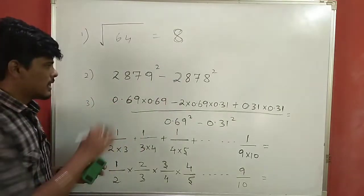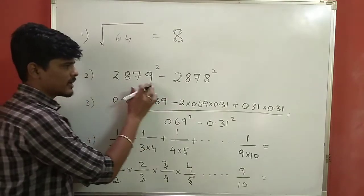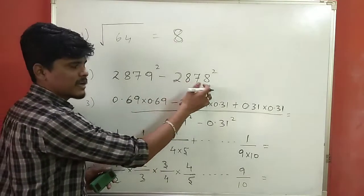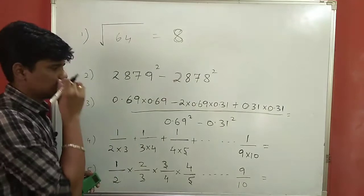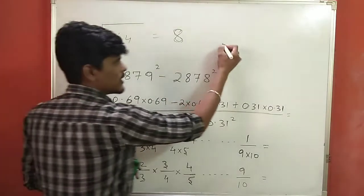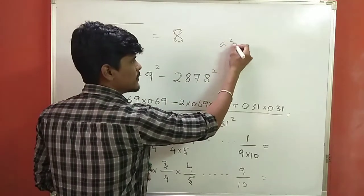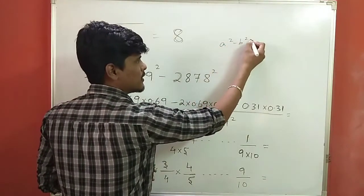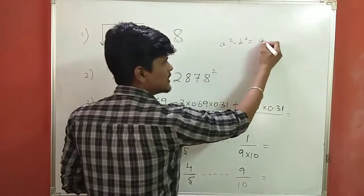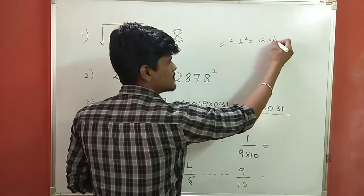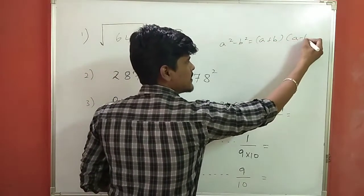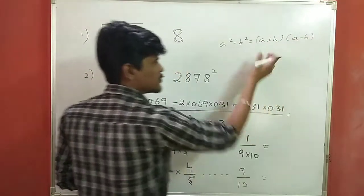Most of these questions — such as 2879 or 2878 — use the A²-B² formula. A²-B² is equal to (a+b)(a-b). That is the formula. So we can add the two values and also subtract the two values.